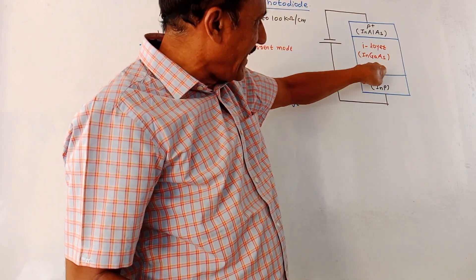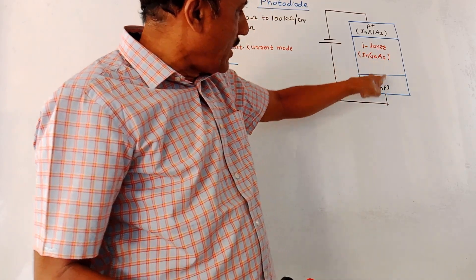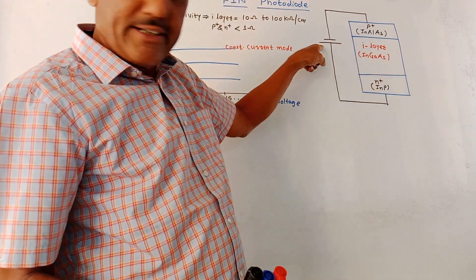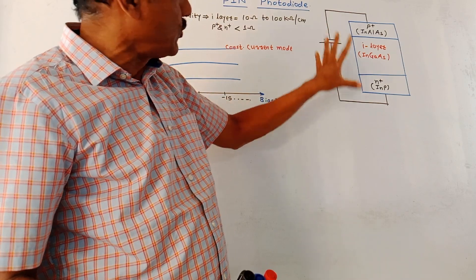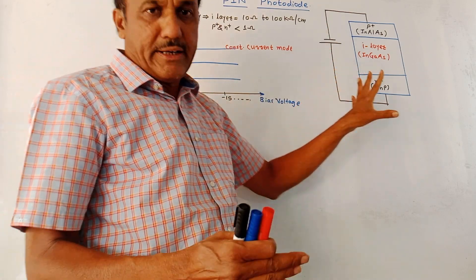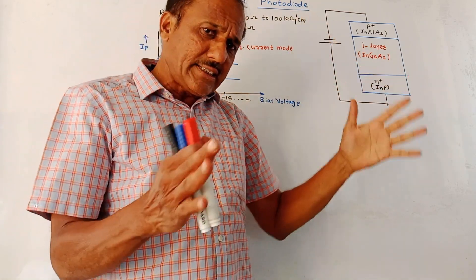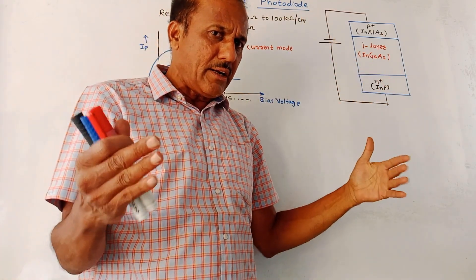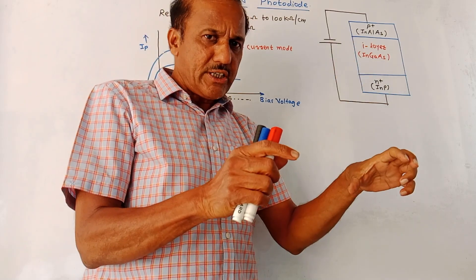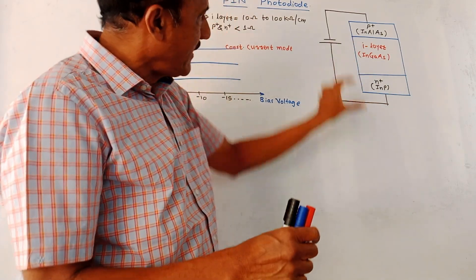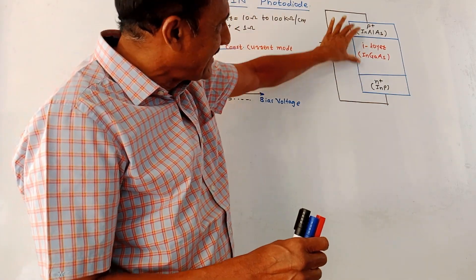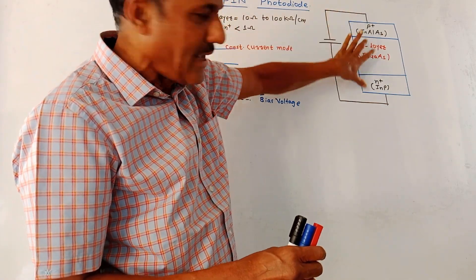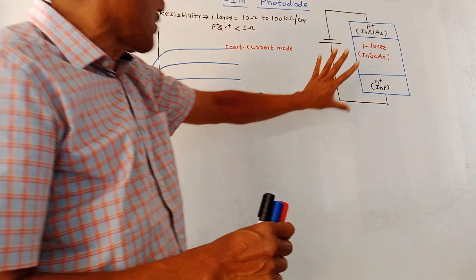All the electrons will be attracted towards the positive terminal of the battery. The working is almost similar to the conventional photodiode; the only major difference is that an I layer is inserted between the P and N regions.